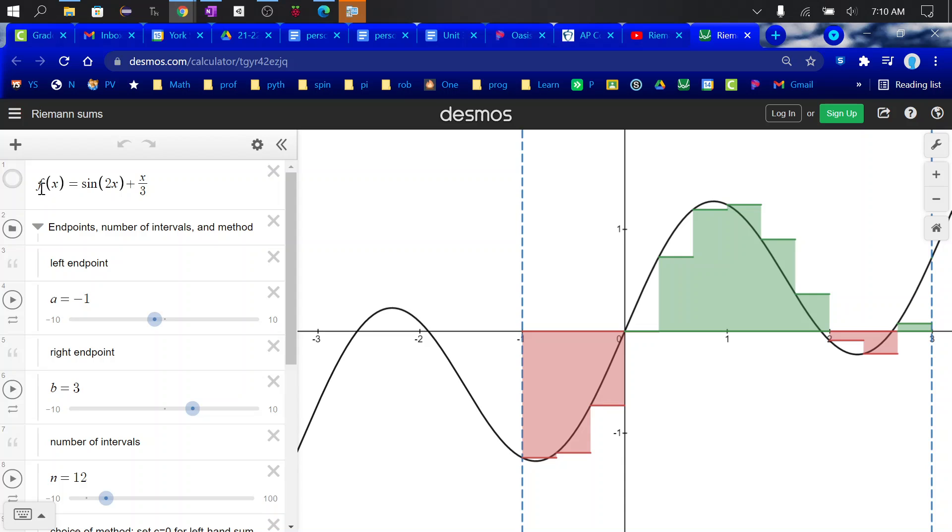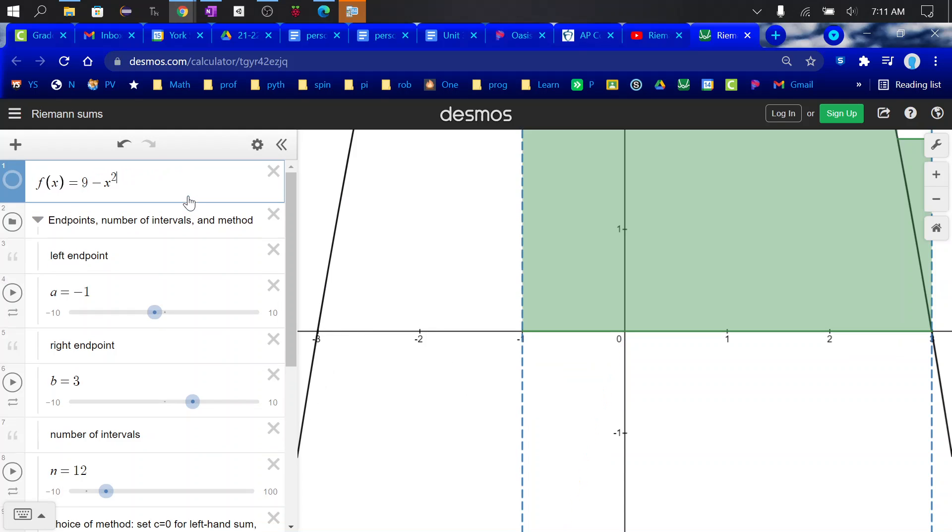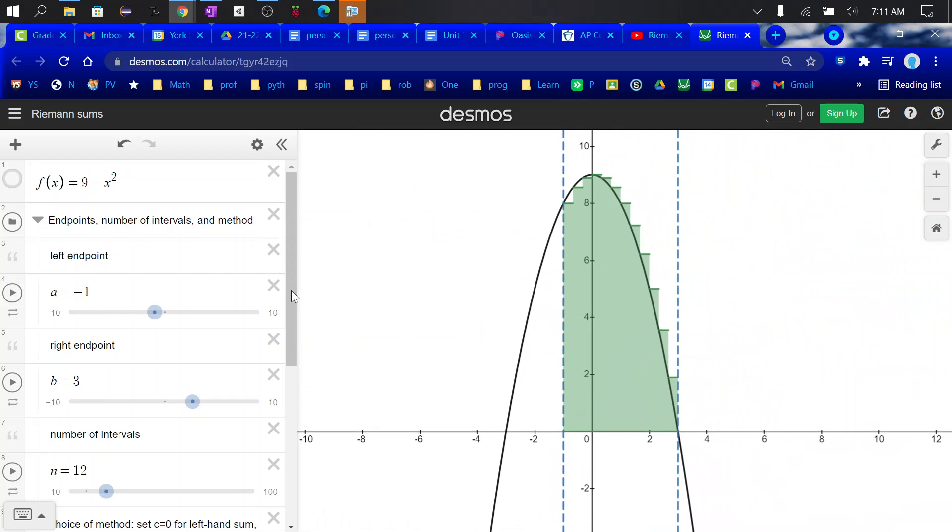Just to give you a little bit, here is the function. You may change this to whatever you want. So if I were to put in here 9 minus x squared, you can see that the function is going to change and you do have these rectangles already in here.